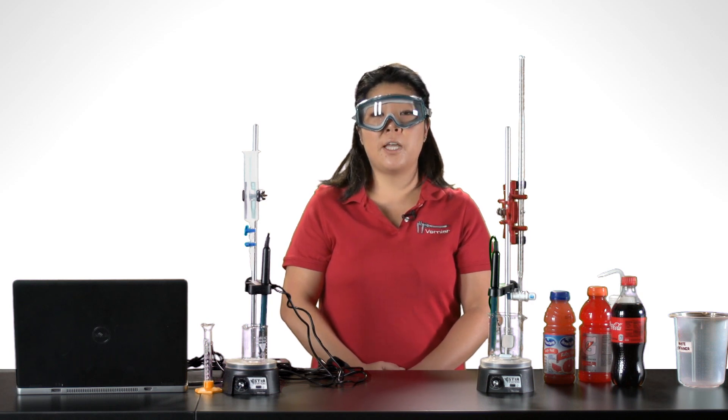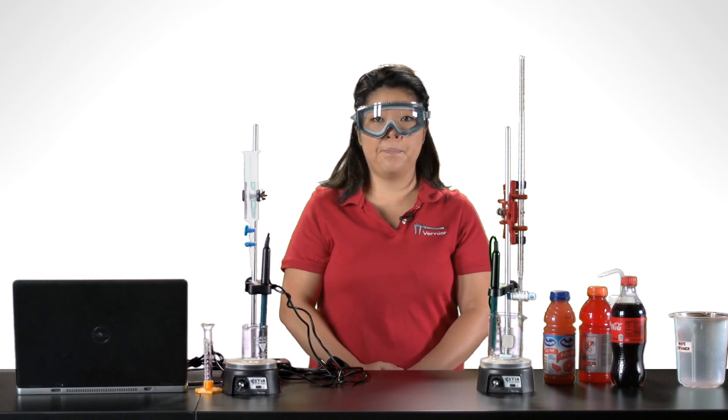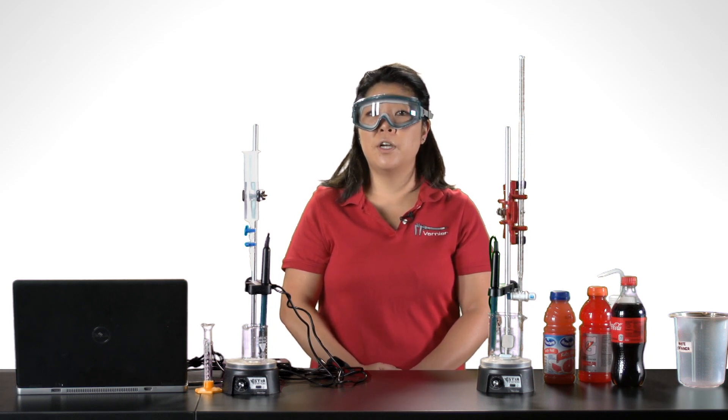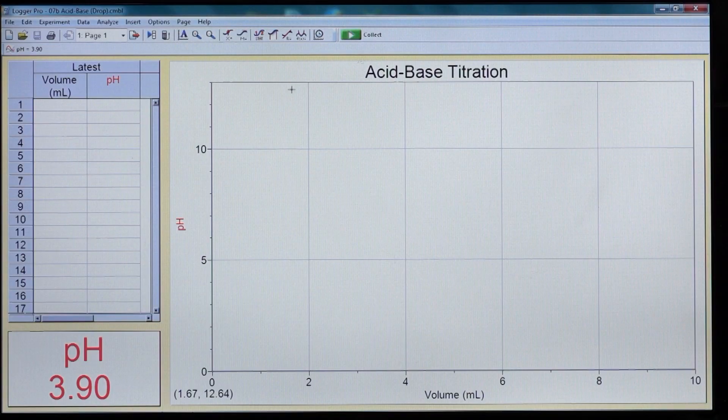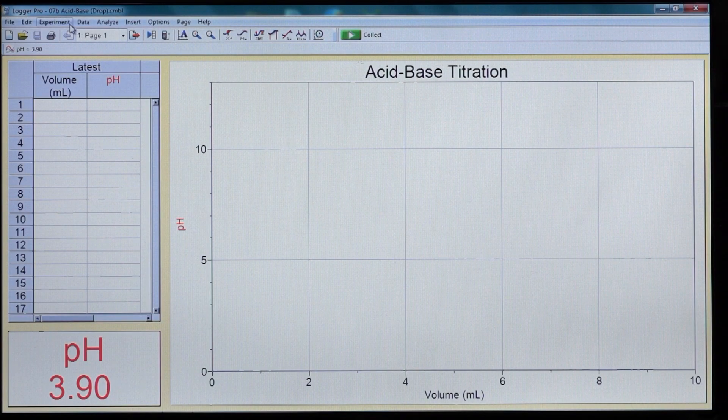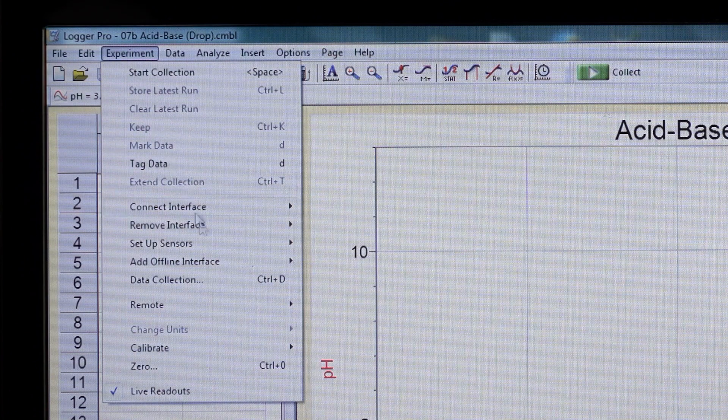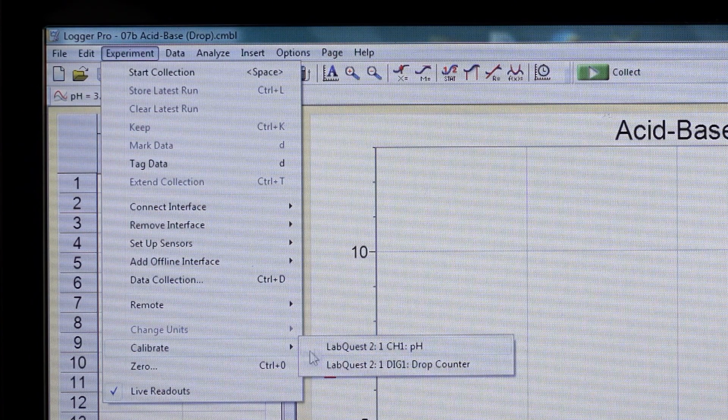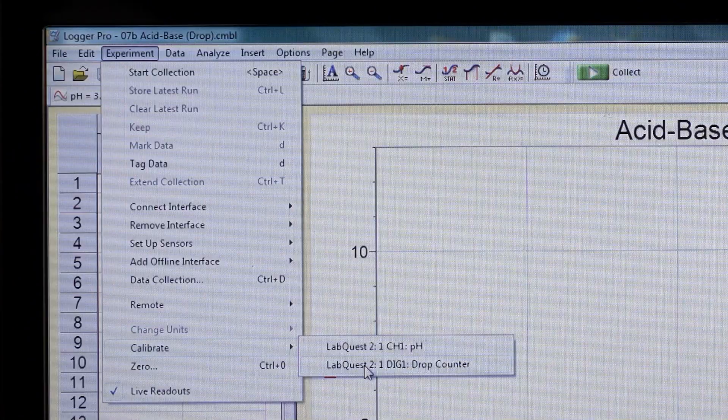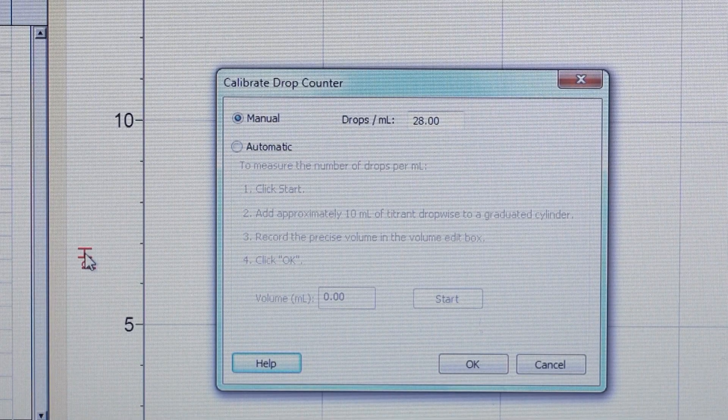The first step is to access the calibration option for the drop counter in your data collection program. In Logger Pro, choose Experiment, then choose Calibrate, and choose Drop Counter. And follow the instructions on the screen.